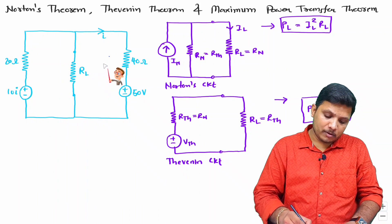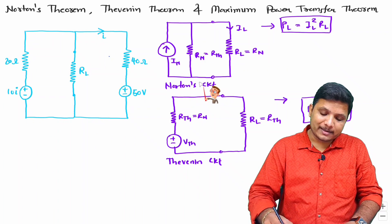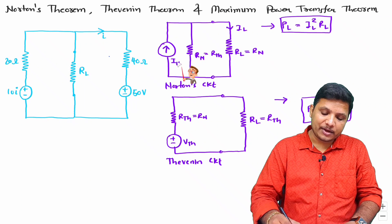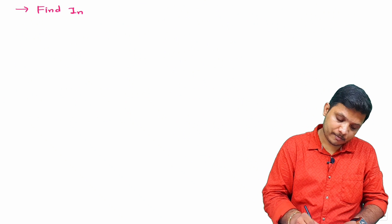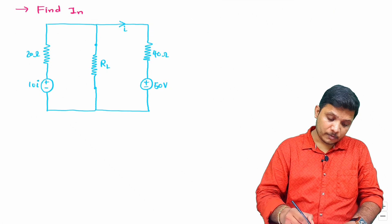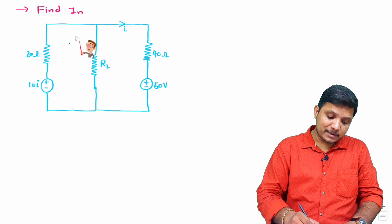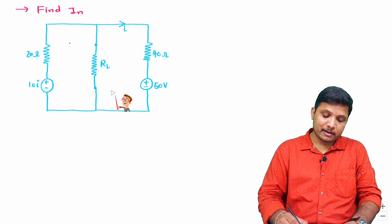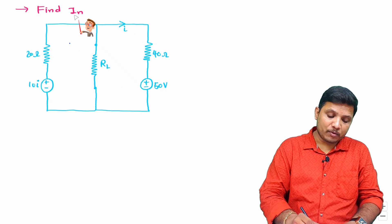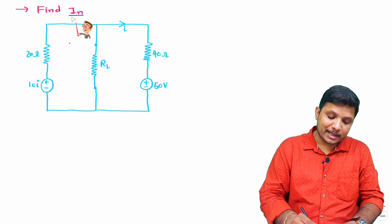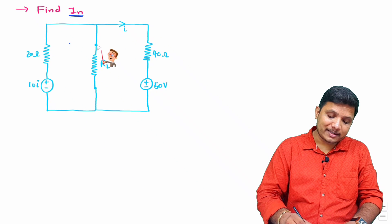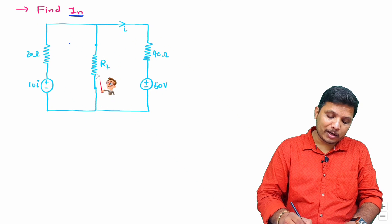Let's begin with Norton's equivalent circuit. We need to identify the value of I_n. In Norton's theorem, when you want to calculate I_n, that is the short-circuit load current — replace R_L with a short circuit and find that current.